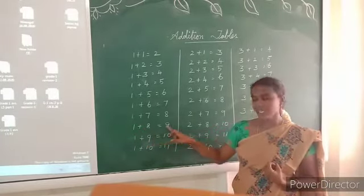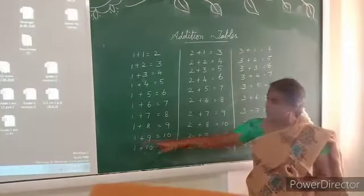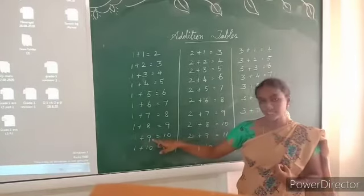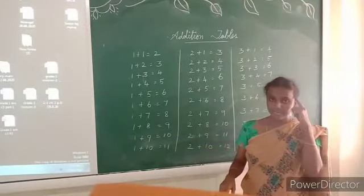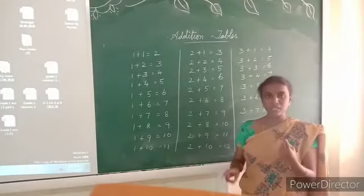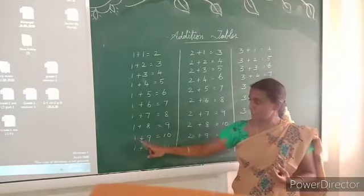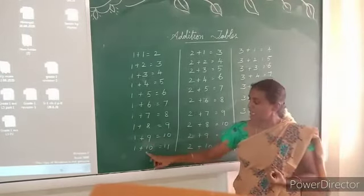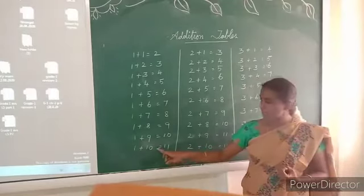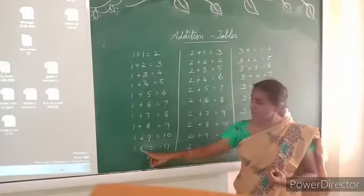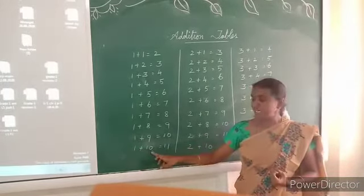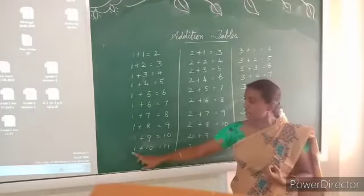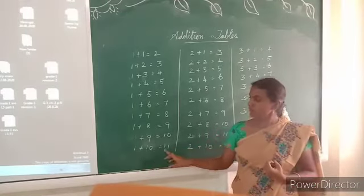1 plus 9: if you compare these 2 numbers, 9 is the greater number. So 9 in the mind, 1 in the finger — 9 after 10. 1 plus 9 is equal to 10. 1 plus 10: if you compare these 2 numbers, 10 is the greater number. So 10 in the mind, 1 in the finger — 10 after 11. If you add 1 with 10, we get 11.